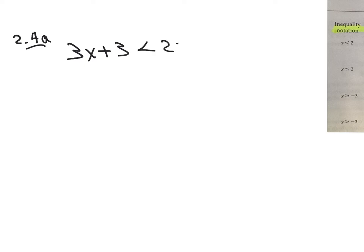So instead of an equal sign, we have what is called an inequality sign, which means that they're not equal — they're unequal. This side over here is going to be less than this side over here. You solve this exactly like you do with an equality, and there'll be a little bit of a change later on, but right now we solve it just like you're used to solving equalities. We're going to get the x's over on the same place.